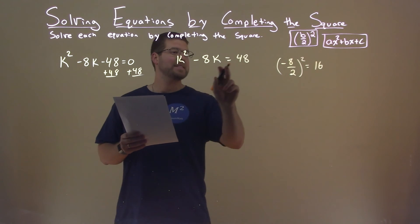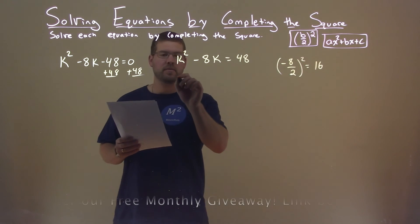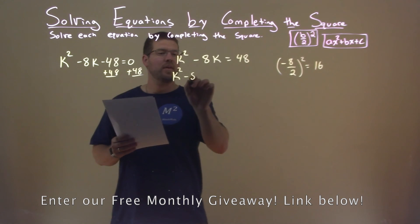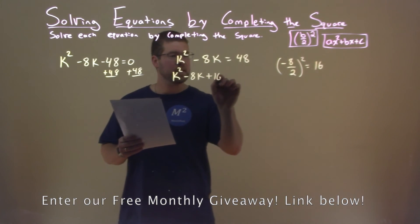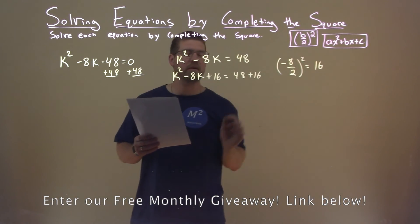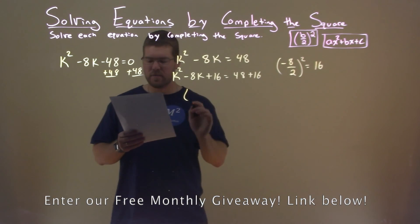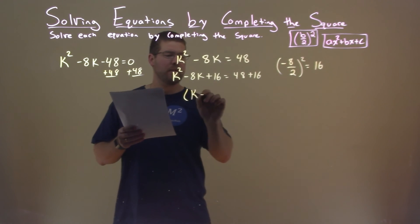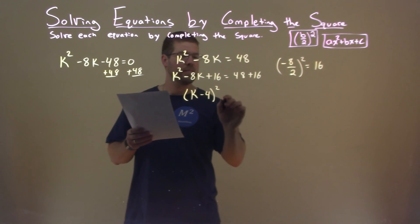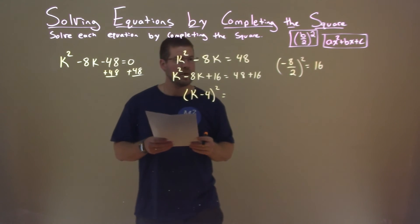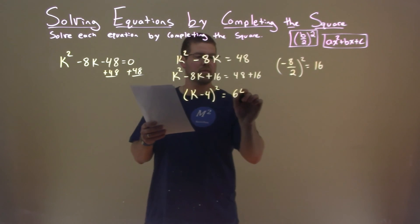So now I'm going to add 16 to both sides of the equation: k² - 8k + 16 = 48 + 16. The left hand side is now a perfect square which is (k - 4)². Right hand side, 48 + 16 is 64.